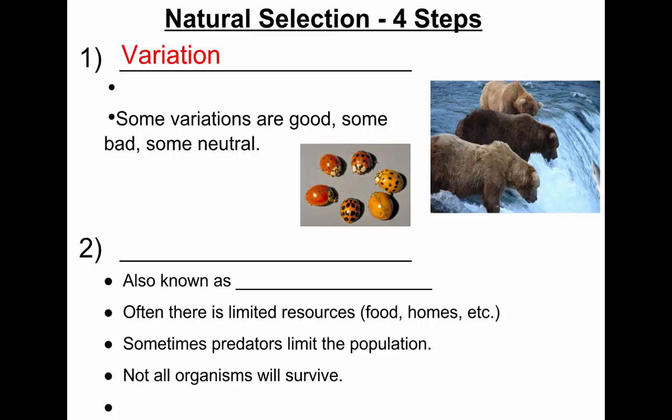You have to start with variation. What does that word mean? A lot of the same things, but something little is different — like a color. It means differences. Is there a lot of variation in height in this class? Of course. There's lots of variation in hair color and eye color. Those are variations, and all living things vary.